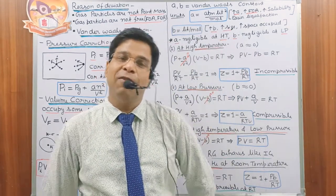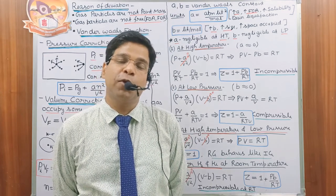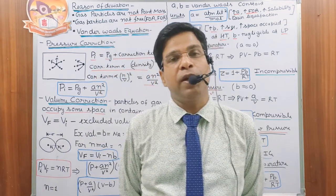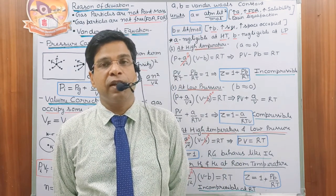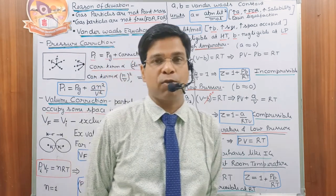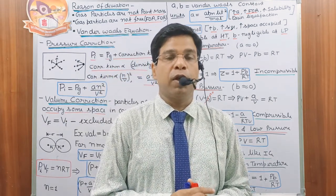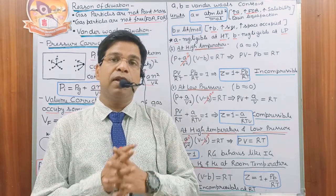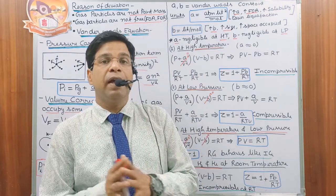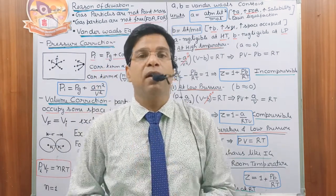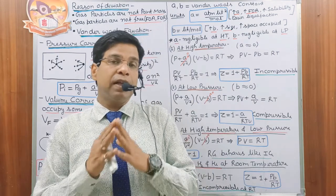Welcome back to the final part of the chapter on gases as a state. In the last video, we ended at the point where we know the compressibility factor always defines the extent of deviation from the ideal gas equation. In our world, no gas is ideal, so there must be reasons and conditions because of which any gas cannot behave like an ideal gas.